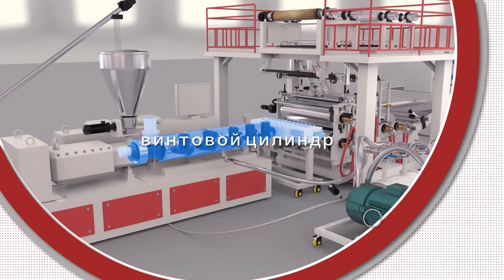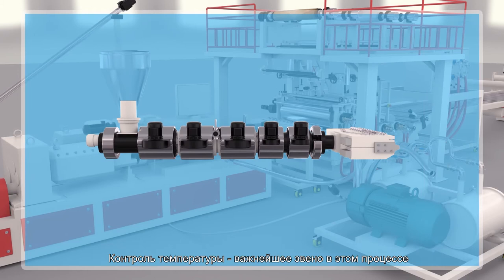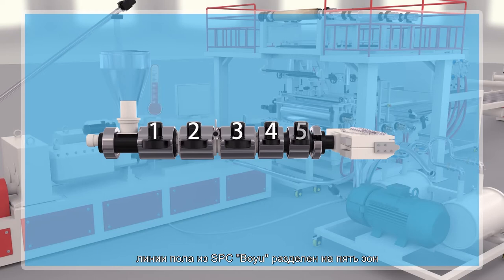Extrusion System. After entering the screw barrel, the materials are plasticized by heated rolling. In this process, temperature control is the most critical link. The temperature control is divided into 5 zones.